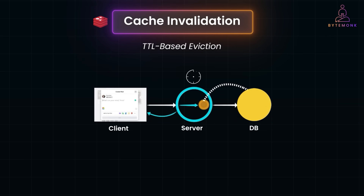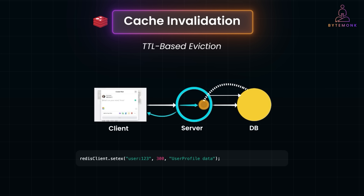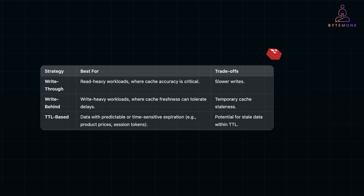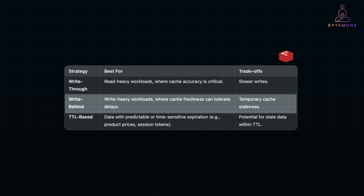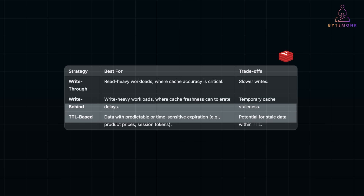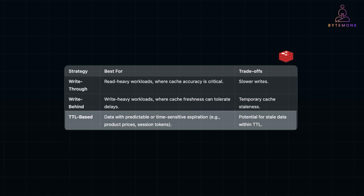Finally, we have TTL-based eviction. Cache data is automatically expired after a set time-to-live (TTL). Once expired, the cache either fetches fresh data from the database or deletes the entry. For example, in Redis, data expires in 5 minutes, ensuring it doesn't linger longer than it should. The choice of invalidation strategy depends on your system requirements: write-through is best for read-heavy workloads where cache accuracy is critical; write-behind suits write-heavy workloads tolerating brief delays; and TTL-based is ideal for time-sensitive data like product prices or session tokens, though stale data is still possible within the TTL window.